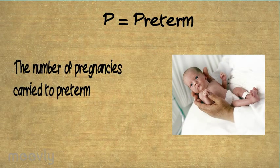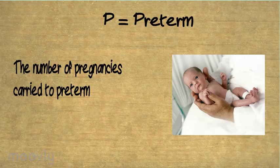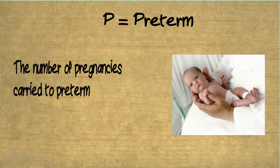Preterm is the number of preterm births. A preterm birth is officially defined as any birth between 20 weeks and 36 and 6/7 weeks gestation. Any multiple births, like twins or triplets, count as one. Using the same example, her gravidity is four, her term is one, and her preterm is one.